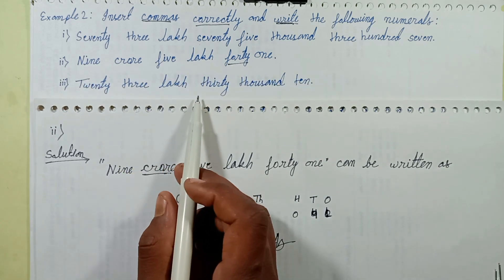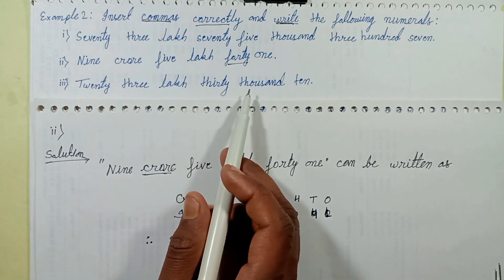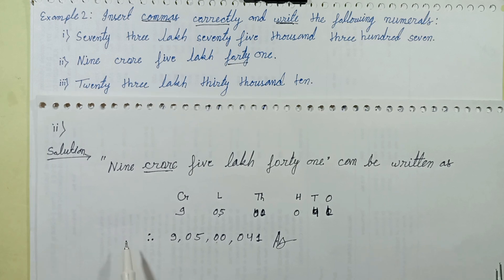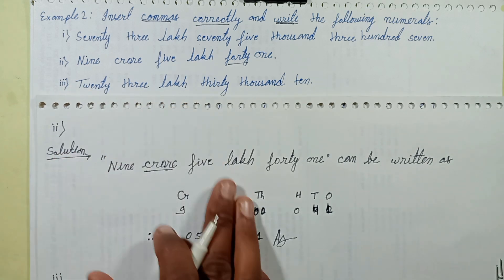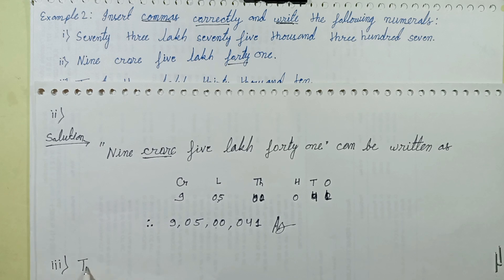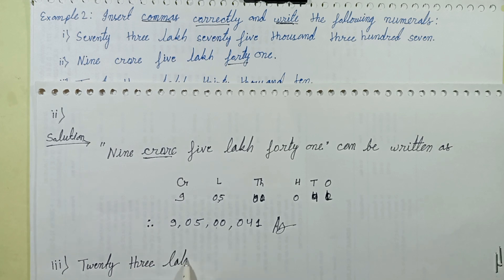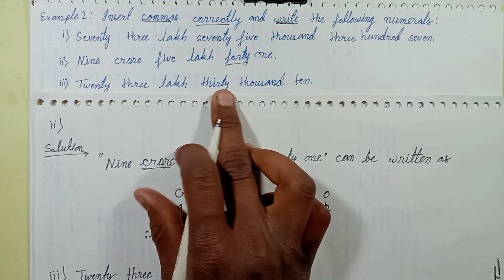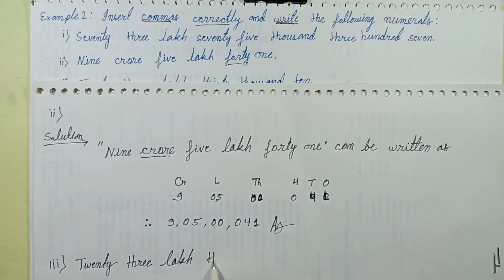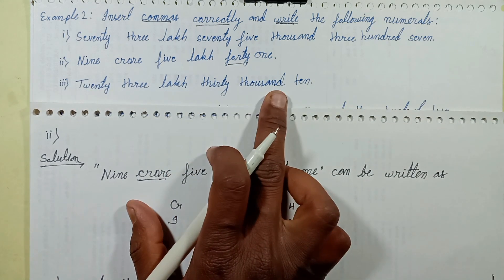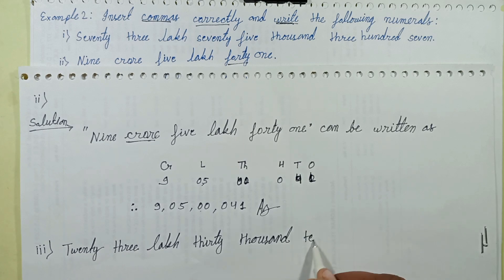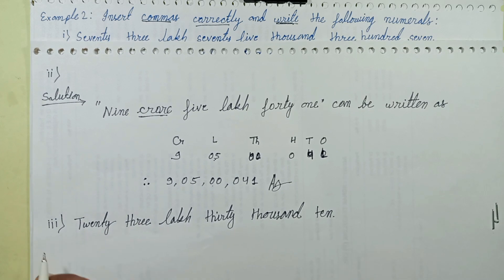Third question: twenty-three lakh thirty thousand ten. Write down question number three: twenty-three lakh thirty thousand ten. Let's go and find the solution.